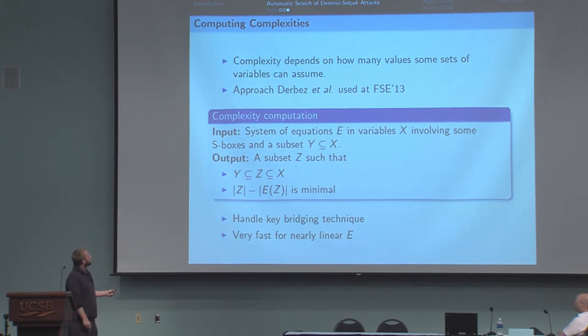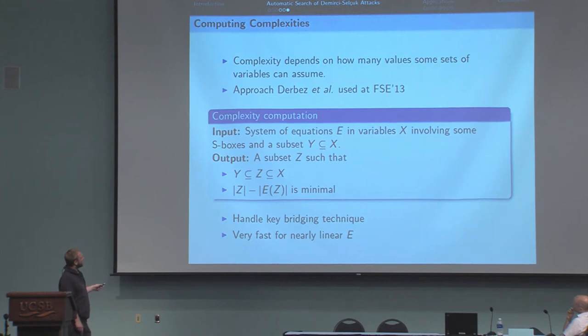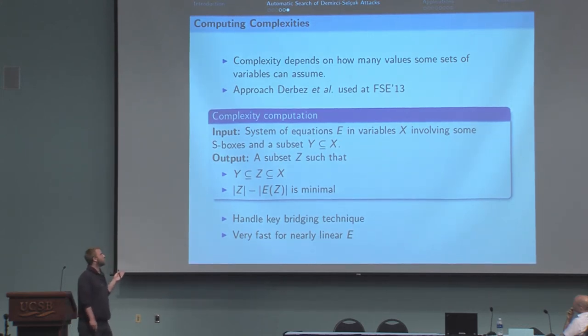To do that, we use the same approach we used for our previous tool. Basically, we have an algorithm that takes as input a system of equations e in variables x and a subset y. And the algorithm outputs a subset z containing y such that its number of solutions of possible values according to e is minimal.